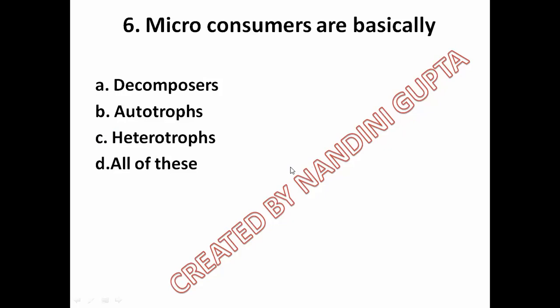Next: micro consumers are basically option A decomposers, option B autotrophs, option C heterotrophs, option D all of these. Micro consumers are basically decomposers, so option A is the correct answer.